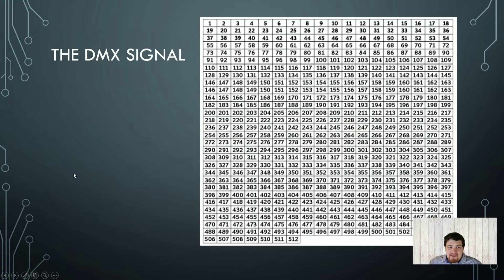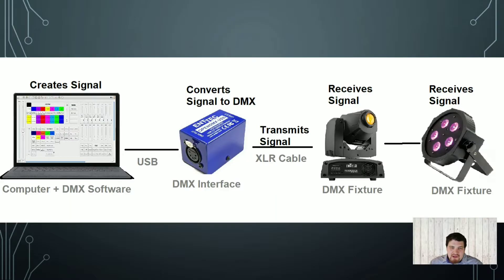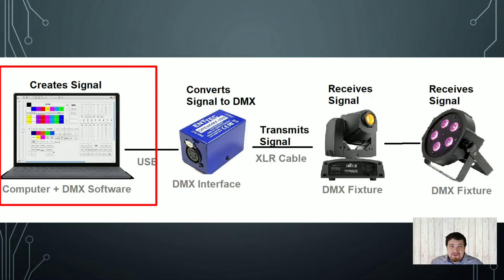The first thing to look at with DMX is the actual signal. There are 512 values that are sent simultaneously. Each one of these values is a number from 0 to 255, with 0 being the default value of off and 255 being the max value. You need a DMX controller, whether that's a physical controller or a computer plus DMX software, that configures those 512 values and sends the signal to your fixtures so that they know what to do.